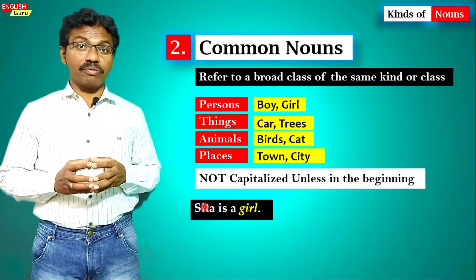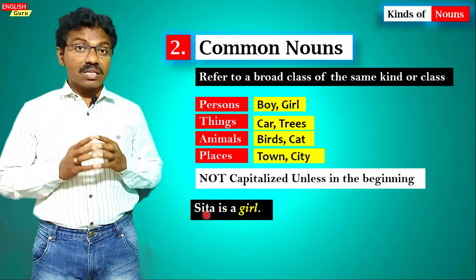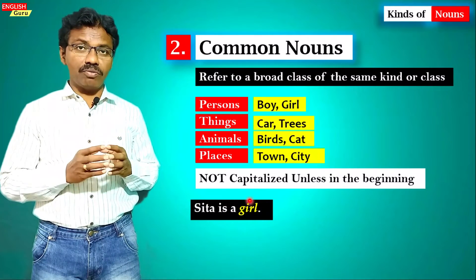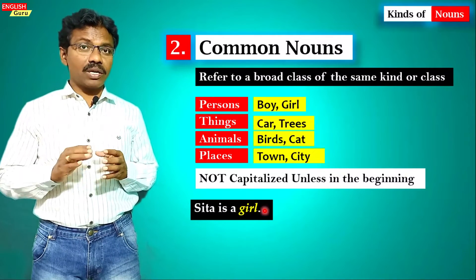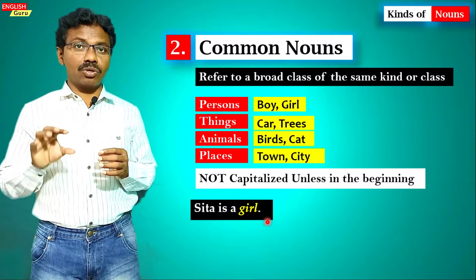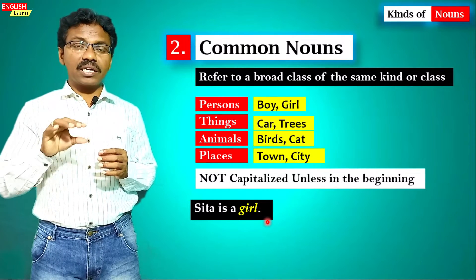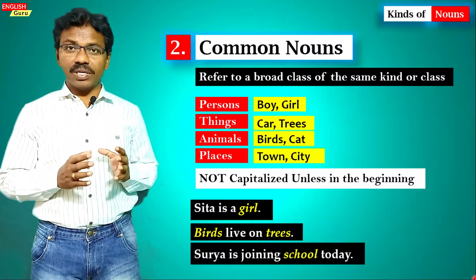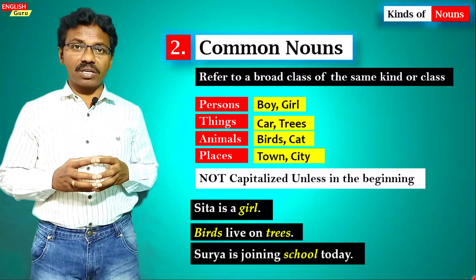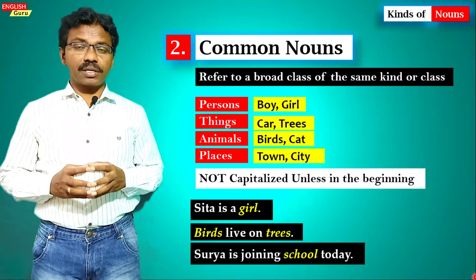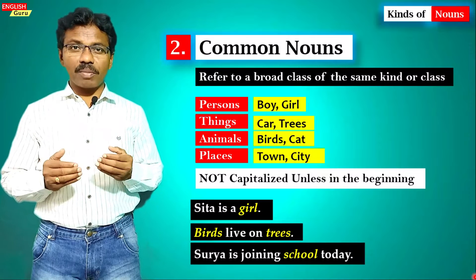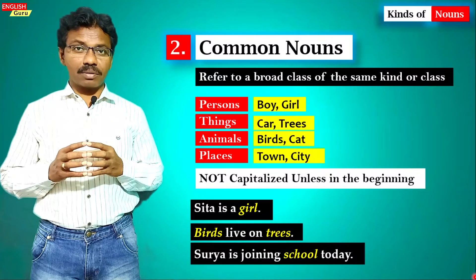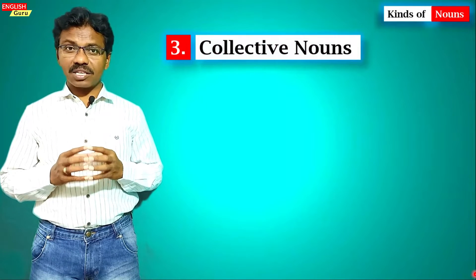In 'Sita is a girl,' the word 'girl' is a common noun whereas 'Sita' is a proper noun — it is a name given to one individual. We can call any girl 'girl,' so it is common to Sita, Gita, and everyone. 'Birds live on trees' — 'birds' and 'trees' are common nouns. 'Surya is joining school today' — 'school' is a common noun. Common nouns are commonly used for a whole class of the same kind.